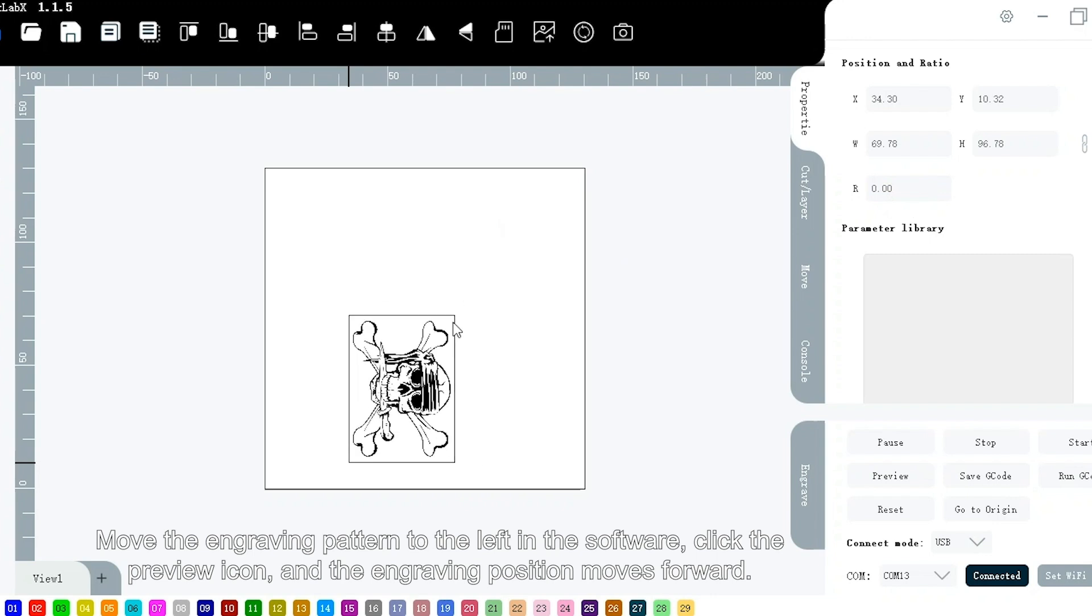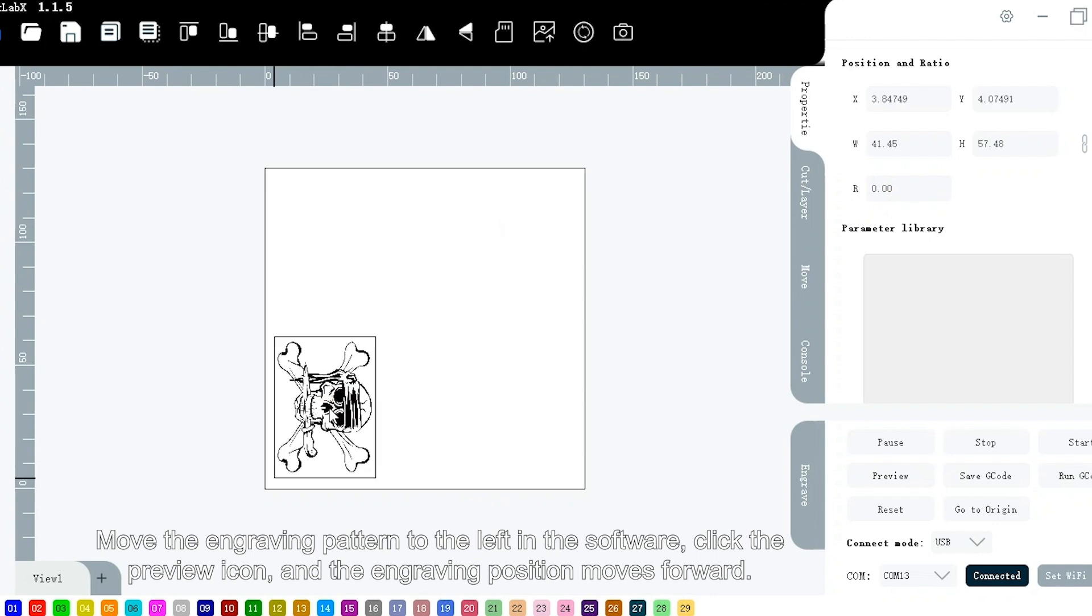Move the engraving pattern to the left in the software. Click the preview icon and the engraving position moves forward.